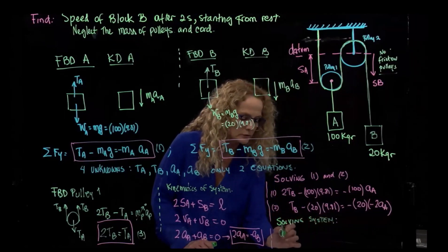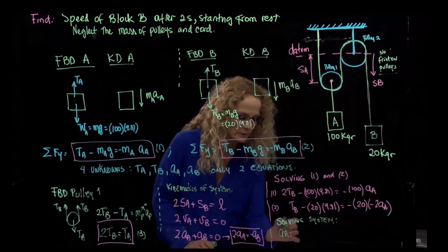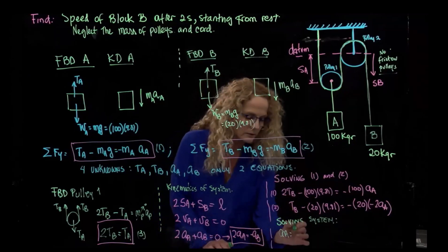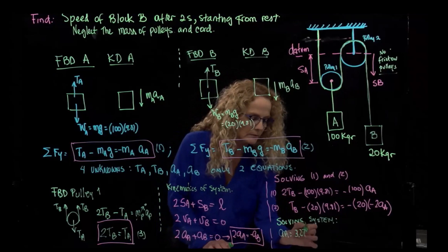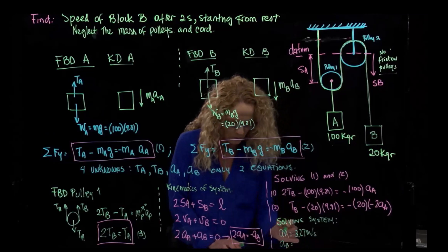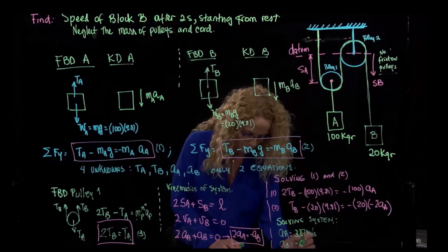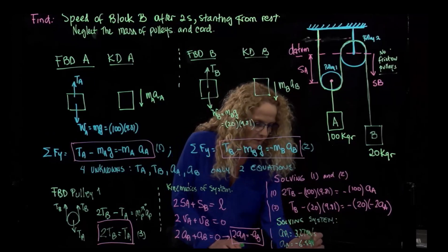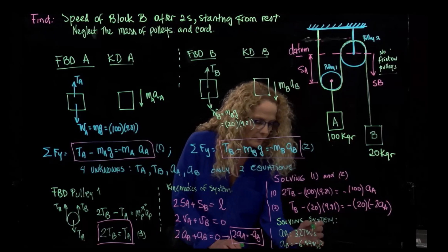I have the acceleration of A, I have the results, I'm going to write them, 3.27 meters over second squared, acceleration of B is equals to negative 6.54 meters over second squared.